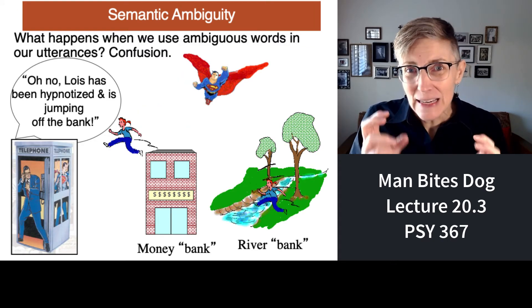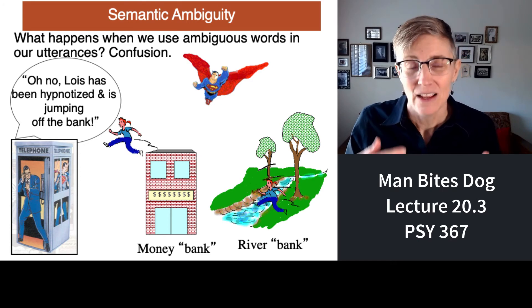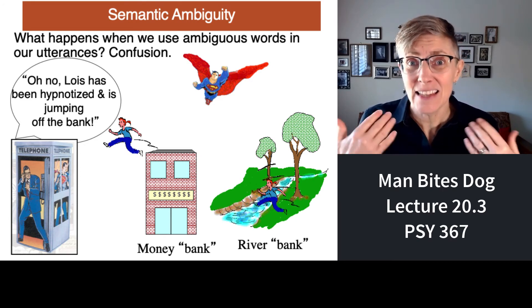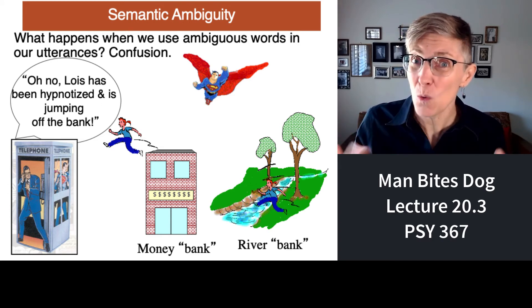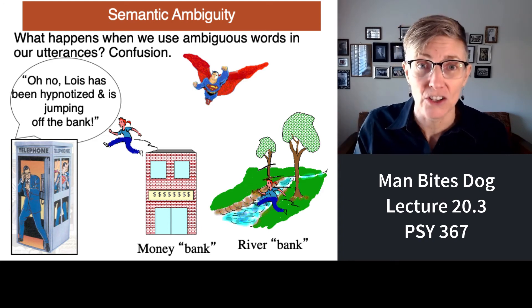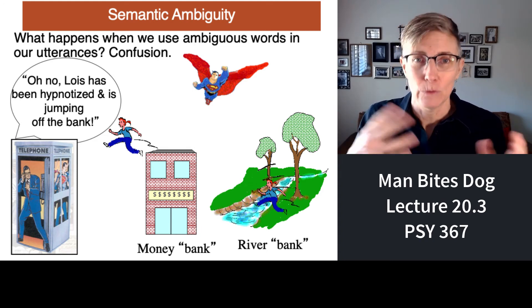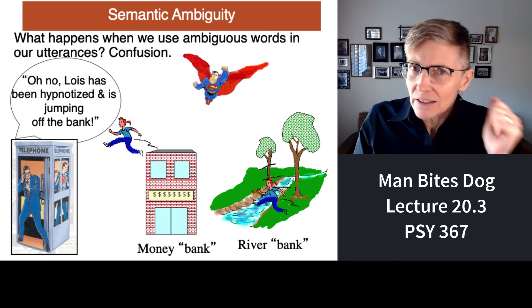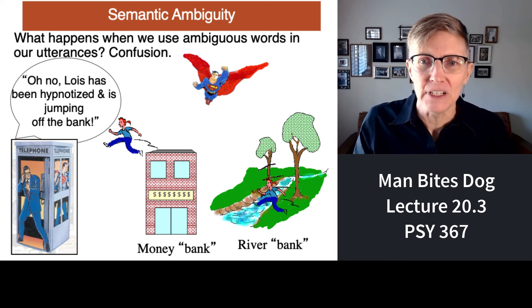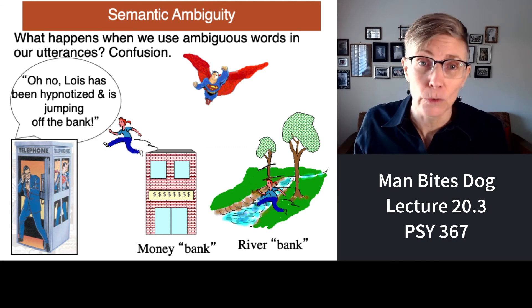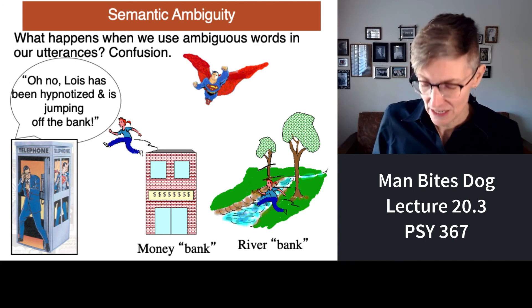Even in written text, the meaning of a word or sentence can be ambiguous, and context doesn't always help in a super direct way. For example, if you watched the cartoon Superman — he was based on this meek guy, Clark Kent — Clark Kent hears: 'Oh no, Lois has been hypnotized and she's jumping off the bank.' Well, where should Superman fly? A bank with money in it, or the bank of a river? It's ambiguous. That's ambiguity in meaning.